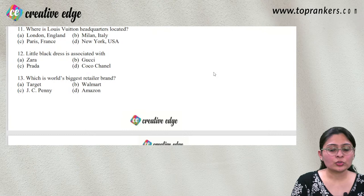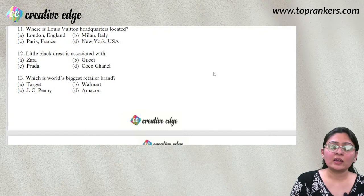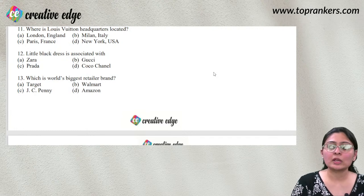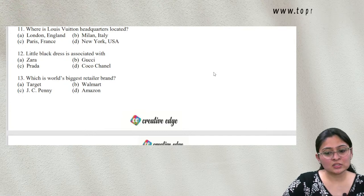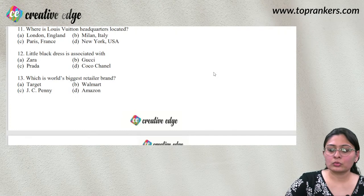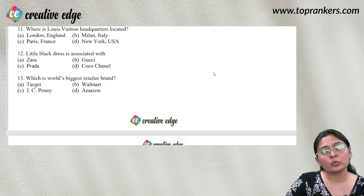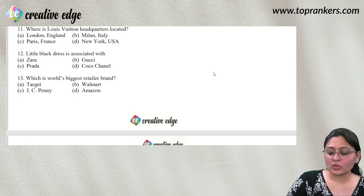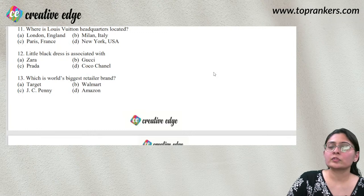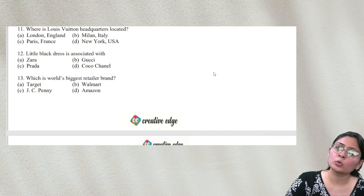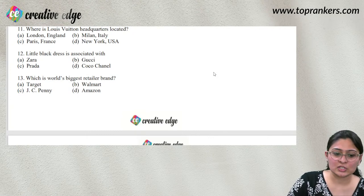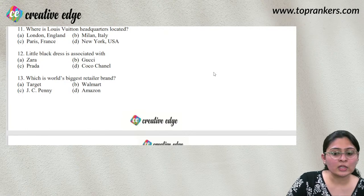H&M is a Swedish brand. Adidas and Puma are both German brands. Italian luxury brands include Gucci, Armani, Diesel, Dolce & Gabbana, Fendi, Valentino, and Versace. French brands include Chanel, Dior, and Louis Vuitton. Search for 'famous apparel brands and their country of origin' to build a comprehensive list.